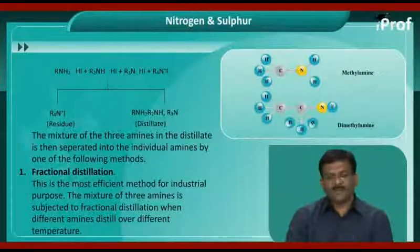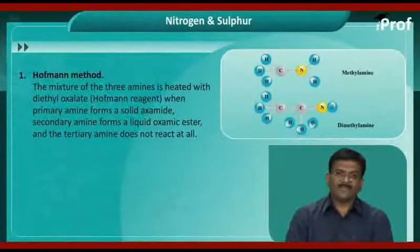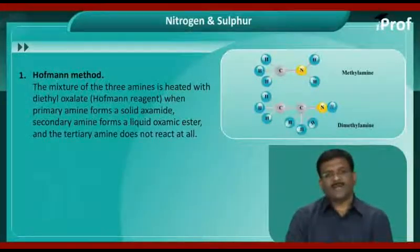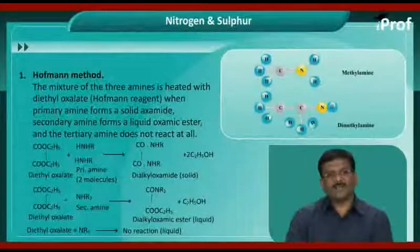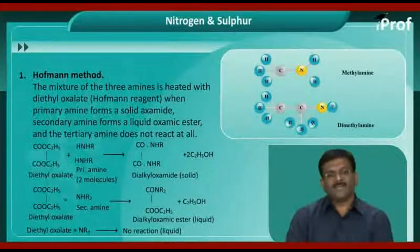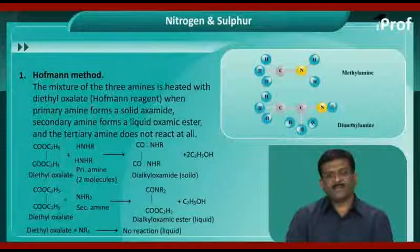The Hoppen method: the mixture of the three amines is heated with diethyl oxalate, the Hoppen reagent. Primary amines form a solid oxamide, secondary amines form a liquid oxamic ester, and the tertiary amine does not react at all.